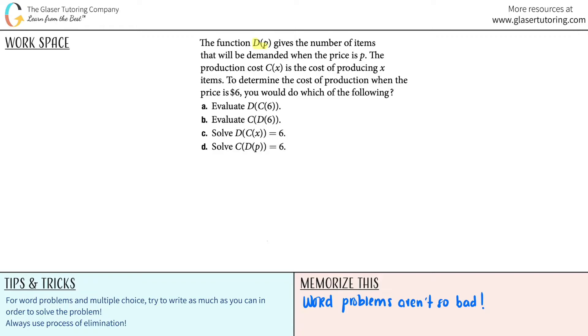The function d of p gives the number of items that will be demanded when the price is p. The production cost, c of x, is the cost of producing x items. To determine the cost of production when the price is 6, what would you do? Which of the following?